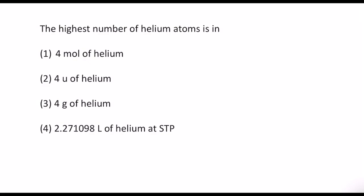4 mole of helium is given in option 1. This means 4 times Avogadro number. We know that NA is 6.022 times 10 to the power 23.